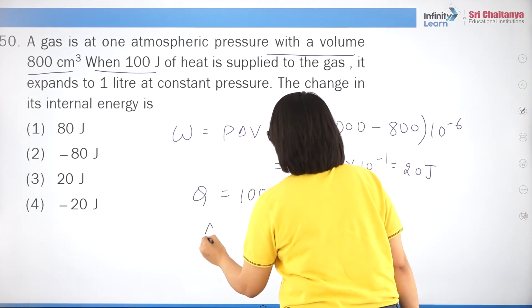Question 29: if a bullet is suddenly stopped, its kinetic energy converts into thermal energy. From MS·ΔT = (1/2)MV², mass cancels, giving ΔT = V²/(2S), which is independent of the mass of the bullet. Correct answer is option 1.